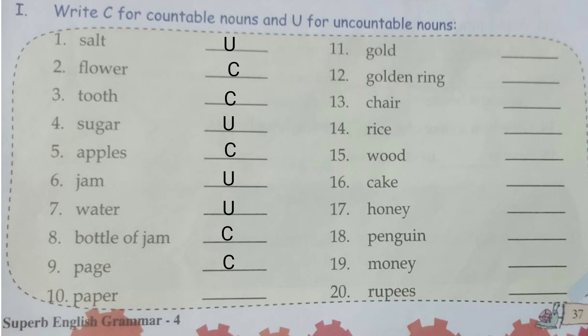Page — countable; page number 1, page 30, page 36. Paper — countable, you can count sheets. Gold — uncountable, but a golden ring is countable — 2 rings, 10 rings. Chair — countable; you can count how many chairs are in your school or at home. Rice — uncountable; we say 'a bowl of rice' because we cannot count rice directly.